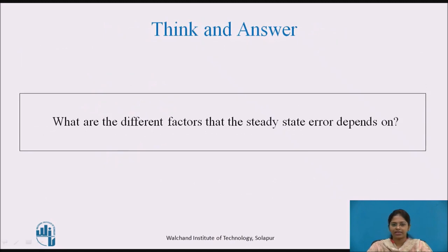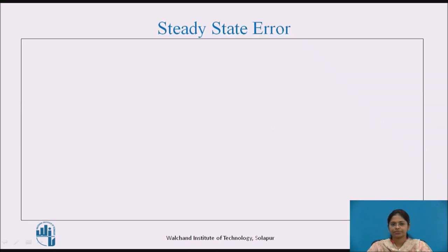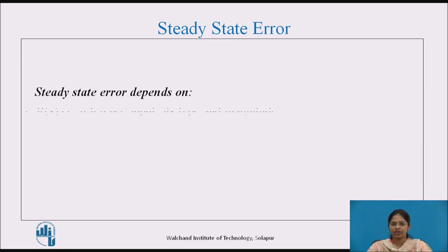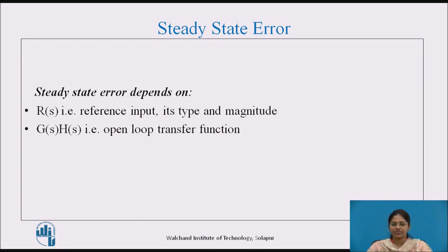Think and answer: What are the different factors that steady-state error depends on? Pause the video and note down the answer. From the expression derived, it can be concluded that steady-state error depends on R(s) — the reference input, its type and magnitude — G(s)·H(s), the open-loop transfer function, and any dominant non-linearity present.